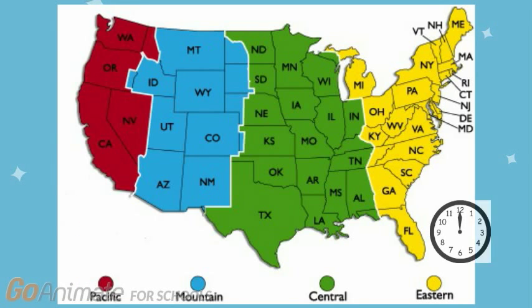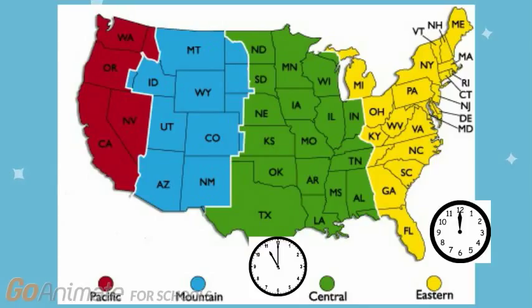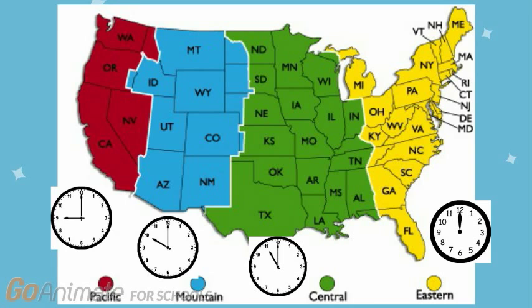When it is noon, or 1200 hours, in the eastern time zone, it is 11 o'clock a.m., or 1100 hours, in the central time zone. It is 1000 hours, or 10 o'clock a.m., in the mountain time zone. And it is 9 o'clock a.m., or 0900 hours, in the Pacific time zone.